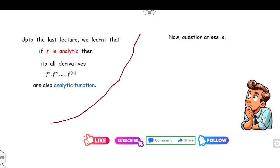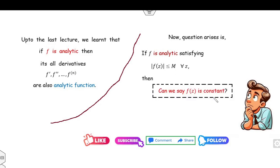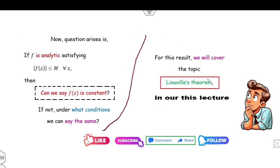Now the question arises: whenever you have a function that is analytic and bounded, can you say the function is constant? That's a very big question. If yes, then it is fine; if no, then under what conditions can we say the function is constant? The answer to this problem is given in today's lecture named Liouville's theorem.